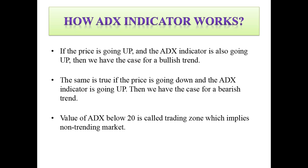Now let's look at how the ADX or the Average Directional Index indicator works. If the price is going up and the ADX indicator is also going up, then we have the case for a bullish trend. The same is true if the price is going down and the ADX indicator is going up — then we have the case for a bearish trend. The value of ADX below 20 is called the trading zone, which implies a non-trending market.